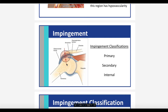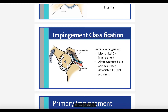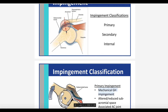With primary impingement, it's what's called a mechanical impingement. By some mechanism, the size of the subacromial space is decreased. One way we could decrease the space is to have the humerus translate superiorly too far. If the humerus comes up too far superiorly, there's less space for these structures because there's less space between the top of the humerus and the acromion.